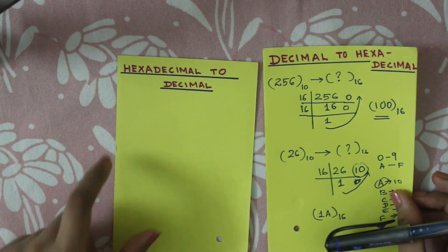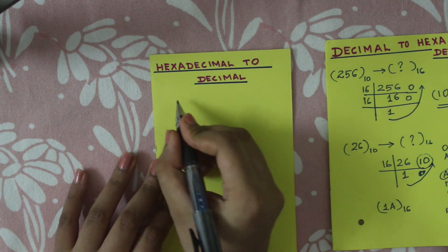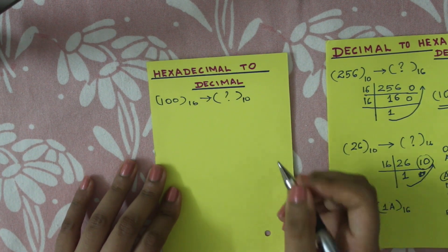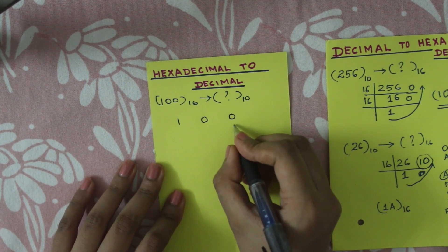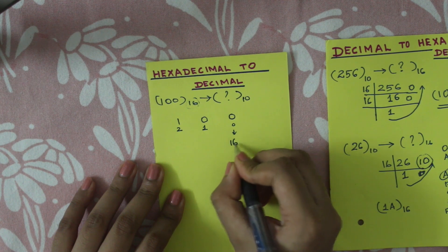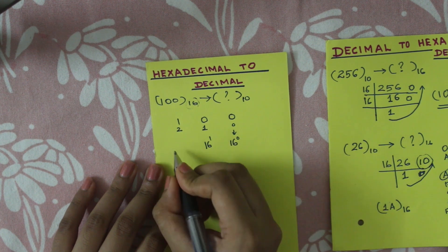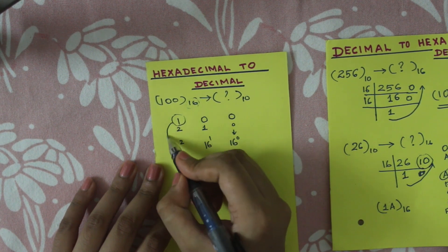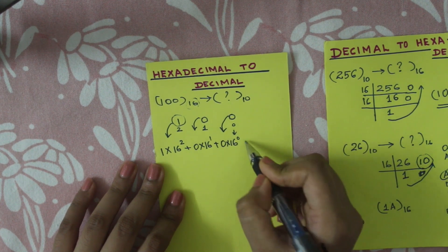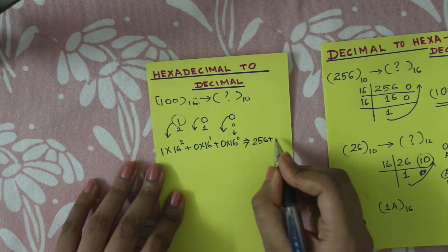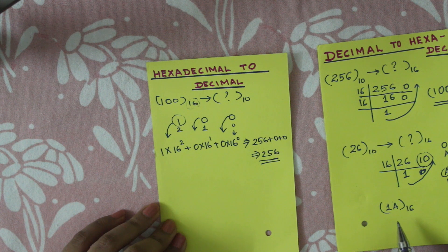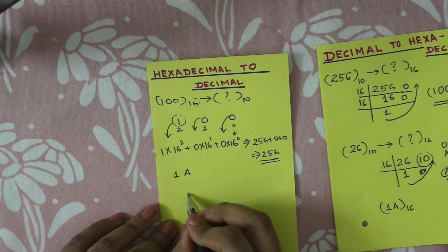Now we know hexadecimal to decimal conversion. Our number is 100 in base 16, converting to base 10. We assign powers: 16 power 0, 16 power 1, 16 power 2. Then we multiply: 1 into 16 power 2 is 256, plus 0 into 16 power 1 is 0, plus 0 into 16 power 0 is 0. So 100 in base 16 equals 256 in decimal.